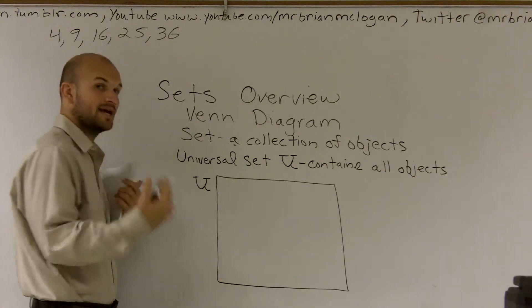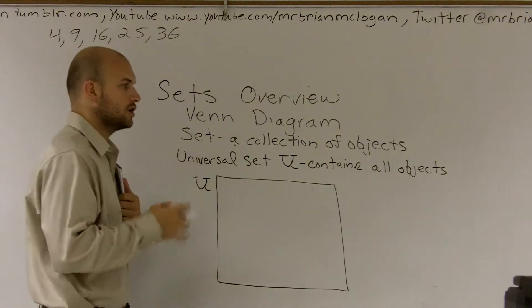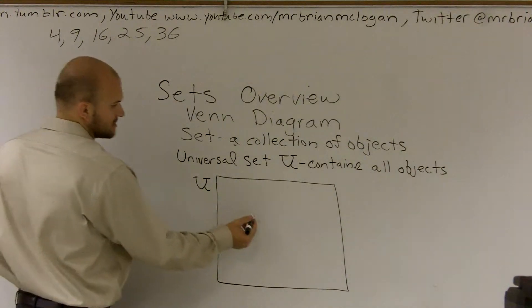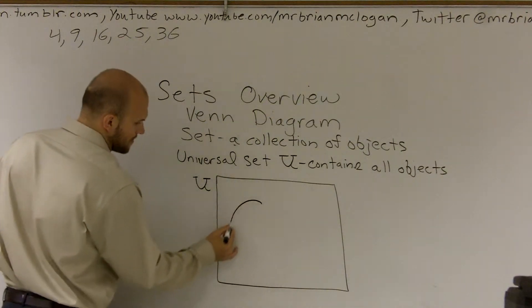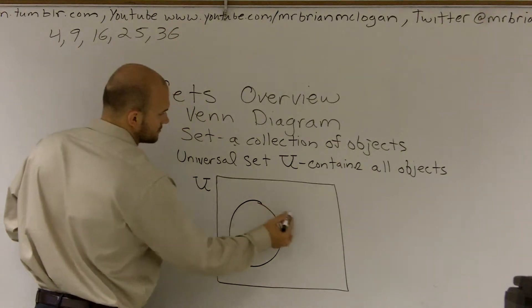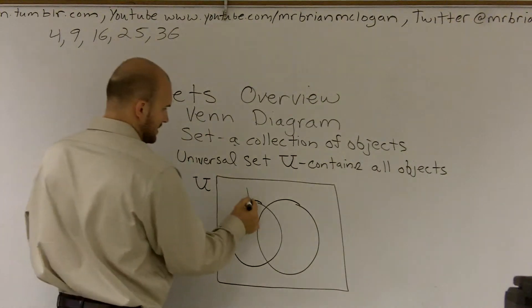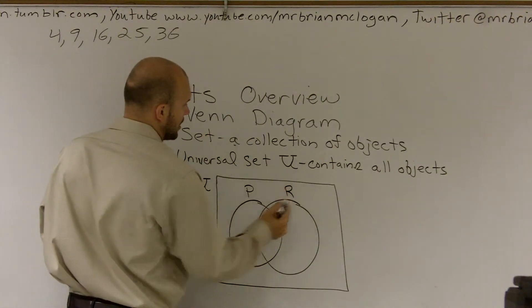Now, within my universal set, I'm going to have a couple other sets, which we call subsets. Remember, a subset is a set within a set. So we're going to create two subsets, and I'm going to label these two sets P and R.